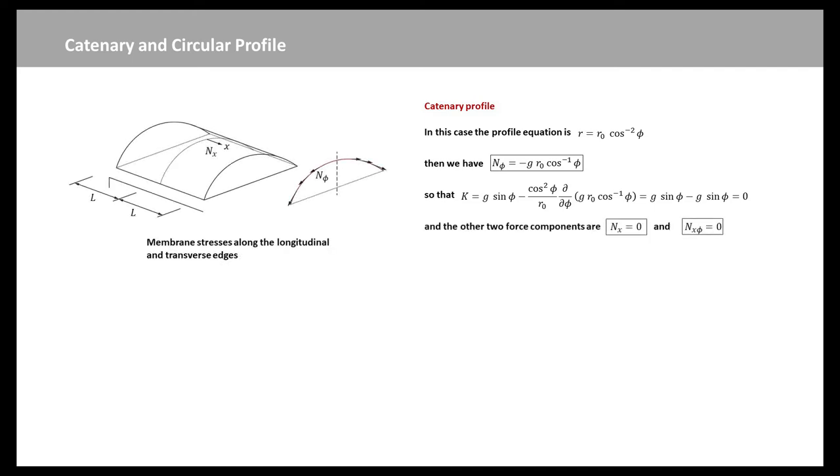The figure shows the barrel vault is uniformly supported on its lateral walls. The central section defined by x equals 0 belongs to a plane of symmetry and therefore Nx_phi equals 0 there. Transverse walls are present at the vault's end section, where the condition Nx equals 0 holds.